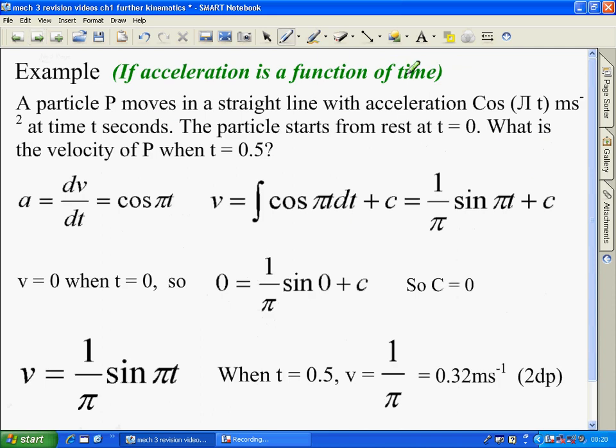So, acceleration is still a function of time. You have a particle moving with acceleration cos pi t, and it starts from rest at t equals 0, and they want the velocity when t is a half. So, acceleration is the differential of velocity with respect to time, which means that velocity is the integral of the acceleration. You must remember, once you've integrated and got 1 over pi sine pi t, to add the constant of integration.